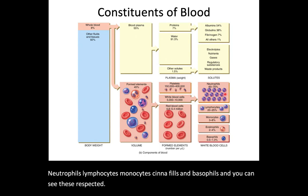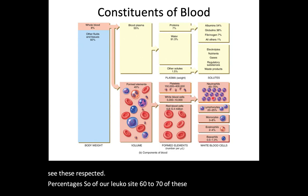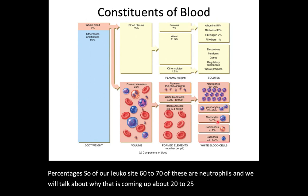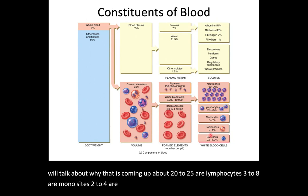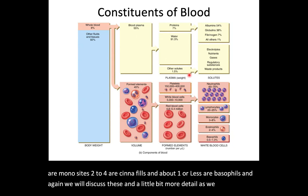Of our leukocytes, 60% to 70% are neutrophils. About 20% to 25% are lymphocytes, 3% to 8% are monocytes, 2% to 4% are eosinophils, and about 1% or less are basophils. We will discuss these in more detail as we move through this video.